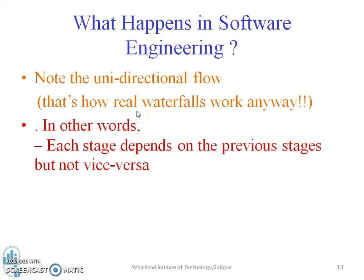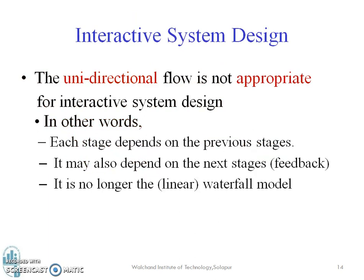Now, what happens in software engineering is that it is a unidirectional flow. That is how a real waterfall works. In other words, each stage depends on the previous stage, but not vice versa. The next stage follows from the previous stage — we cannot have the next stage first and then the previous stage.